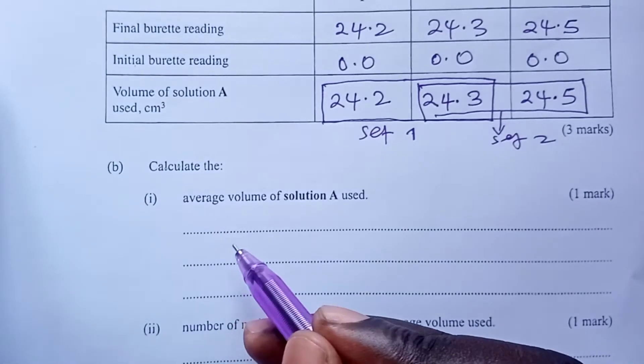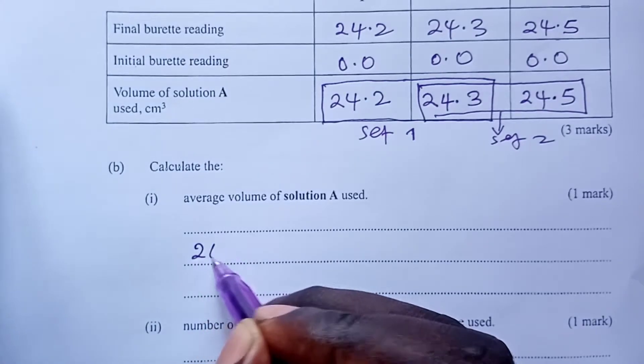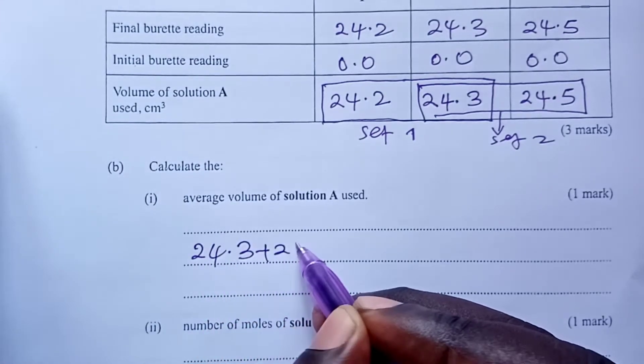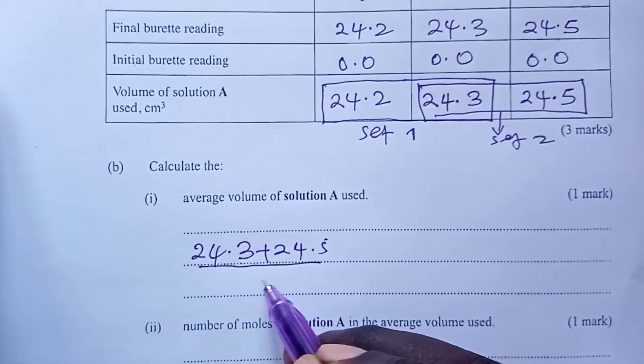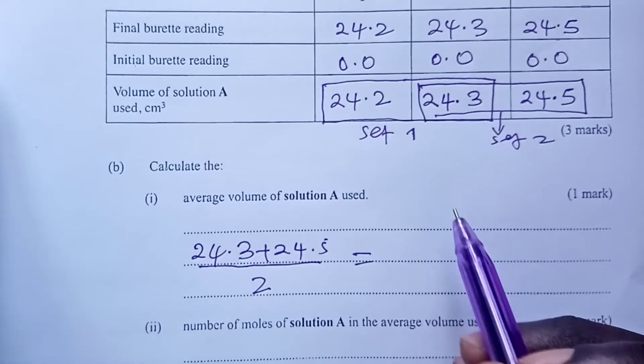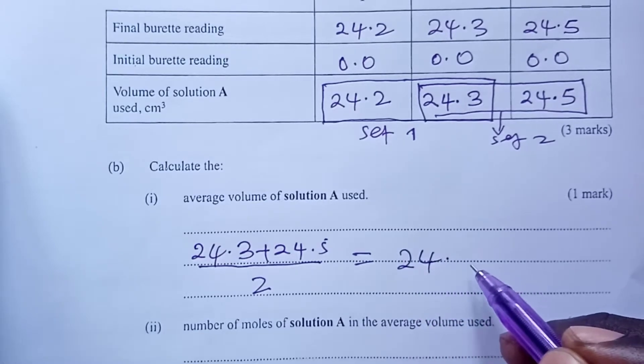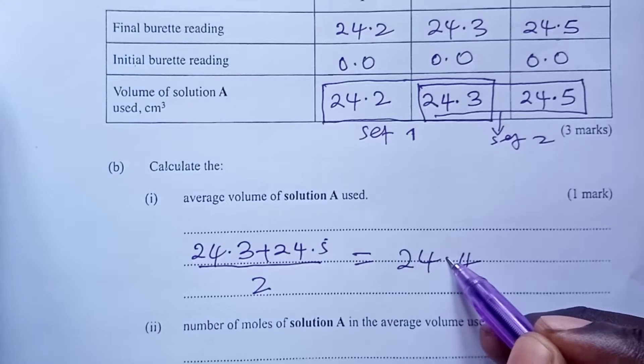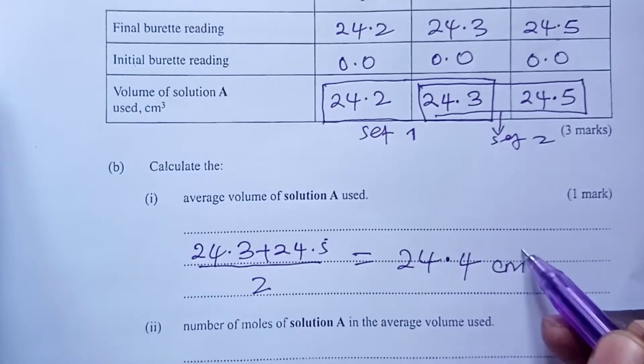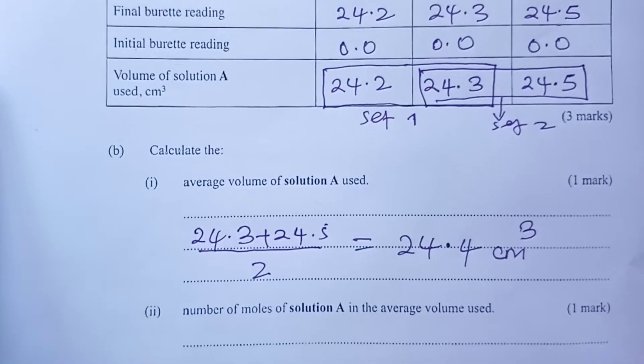Now, so we want to move to the questions having filled our table. So the first question asks to calculate the average volume of A used. I want us to use our set two. Don't use both sets in your script. Just pick one set out of the two sets. The other set, leave the examiner to do it for you should you want to score the mark on accuracy and final answer. So we have 24.3 plus 24.5 divided by 2, giving us 24.4 cubic centimeters.